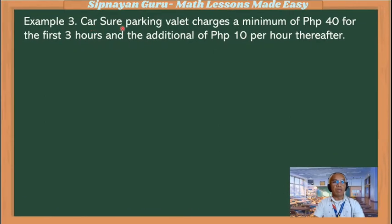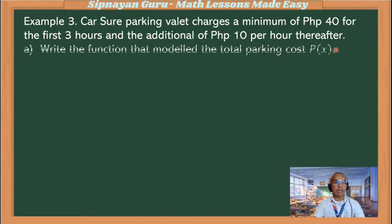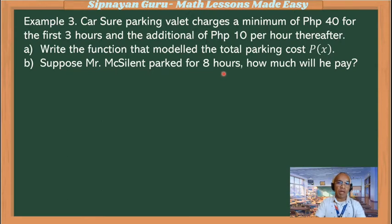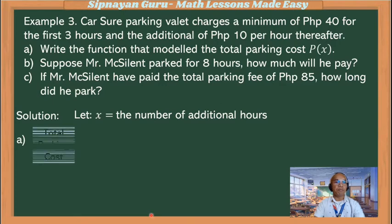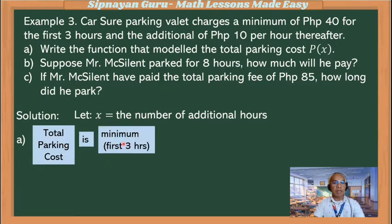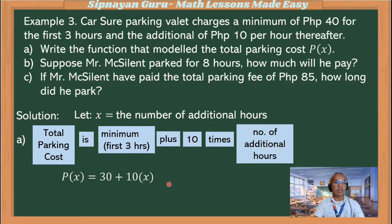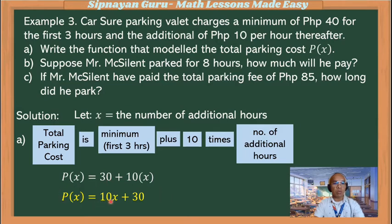Example 3: Carsure parking valet charges a minimum of 40 pesos for the first 3 hours and an additional 10 pesos per hour thereafter. Write the function that models the total parking cost P(x). We let x be the number of additional hours. The minimum parking fee, good for 3 hours, is 30 pesos. The additional is 10 times x per hour. So the function that models the situation is P(x) = 10x + 30.